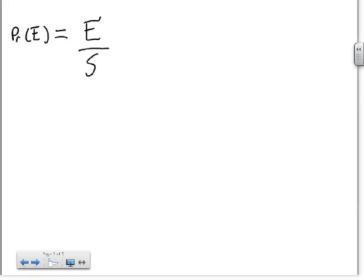For example, the probability that you roll a 1, there's only one way you can roll a 1, so E would be 1, and the sample space is the six different numbers that you could possibly get when you roll a dice. So you have a 1/6 chance of rolling a 1 on a six-sided dice.